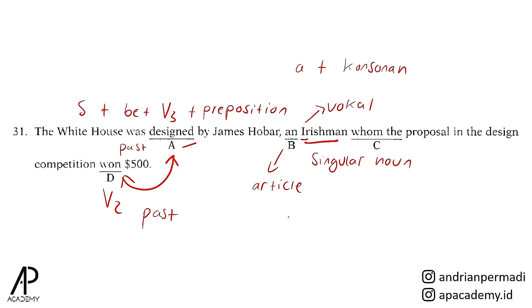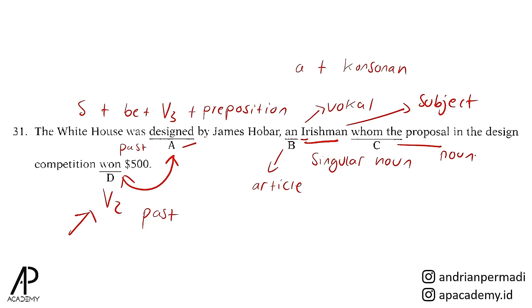Oleh karena itu jawabannya adalah C: whom. Whom adalah connector atau conjunction yang dipakai untuk merujuk suatu noun yang berfungsi sebagai objek. An Irishman di sini adalah noun yang berfungsi sebagai subject karena wanted adalah verb untuk an Irishman. Selain itu, apa yang muncul setelah whom adalah the proposal. The proposal adalah noun yang bukan manusia. Apabila kita menemukan noun yang bukan manusia, maka kita harus memakai conjunction whose karena whose menunjukkan kepemilikan—proposal ini dimiliki oleh an Irishman. Oleh karena itu, connector yang dipakai adalah whose.